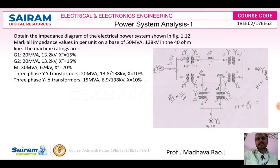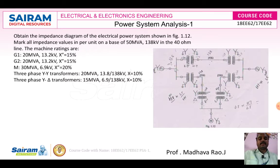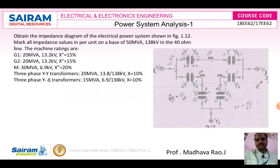Motor rating is 30 MVA, 6.8 kV, and reactance is 20%. The three-phase star-to-star transformer is 20 MVA. These are the values of the different components, and using these values along with the diagram, we need to draw the impedance diagram.